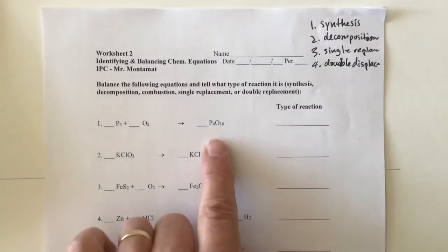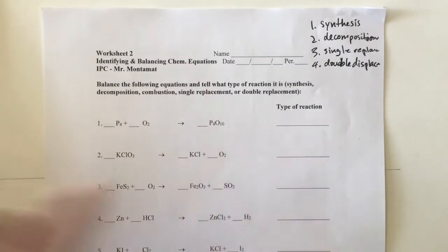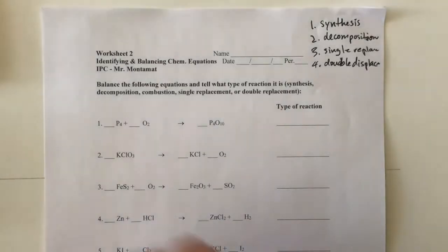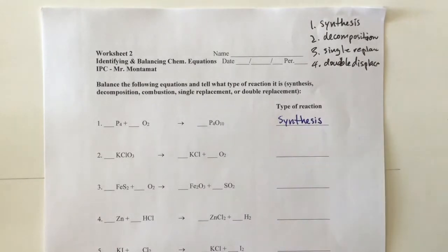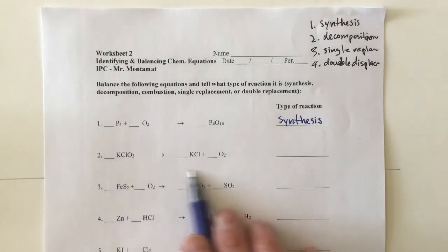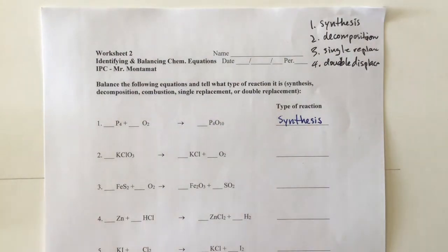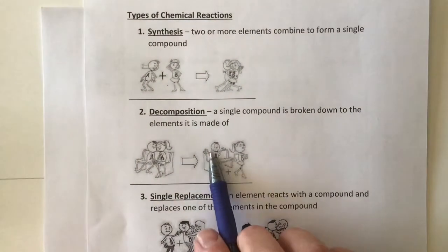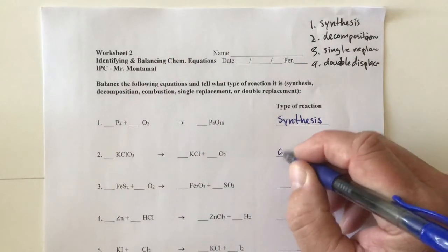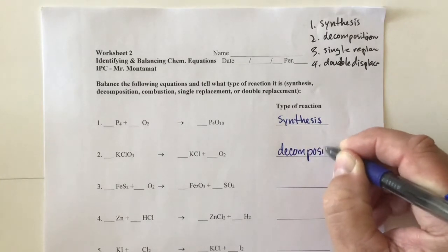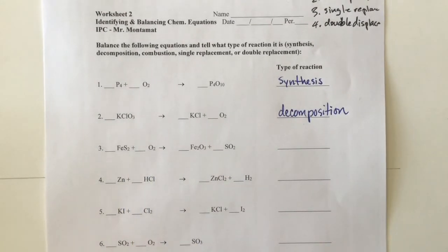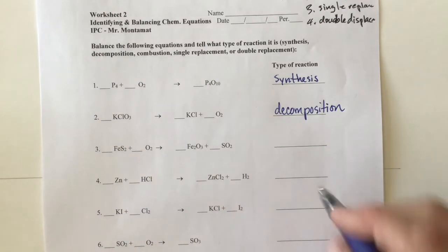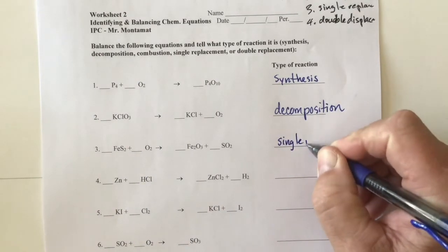Looking at number one, we have one product and two elements coming together to make that one product — that is synthesis. On number two, we have one reactant broken down into simpler compounds and elements — that is decomposition. Number three looks like a single replacement: we have a single element and a compound, so this one is single replacement.